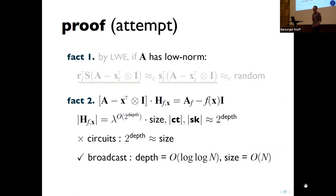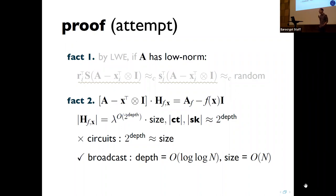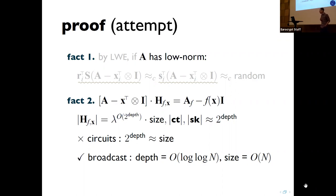ABE for general circuits is not that interesting here since we already knew how to achieve ciphertext size depending on circuit size. But this is sufficient for optimal broadcast encryption, which corresponds to circuits of very small depth — logarithmic in N — so 2^depth is poly(N), giving optimal broadcast encryption. So for now, let's give up on circuits and focus on achieving optimal broadcast encryption.